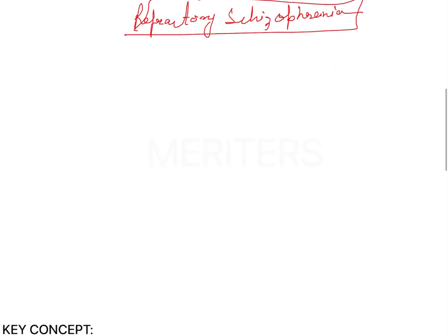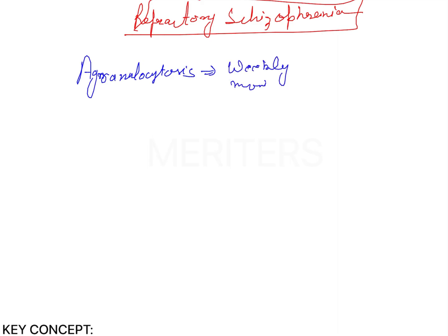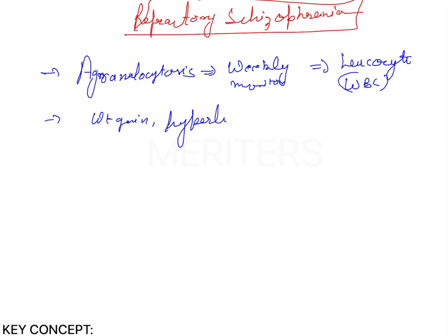Now, the major limitations of this drug are more relevant here since the question is based on that. The most major limitation is agranulocytosis. If you are putting a patient on this drug, you have to weekly monitor the leukocyte count — the WBC count — and here the WBC count is also decreasing in this patient. Other complications include weight gain, hyperlipidemia, and precipitation of diabetes.